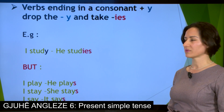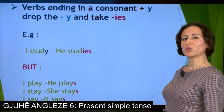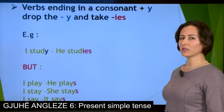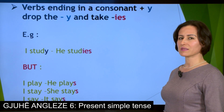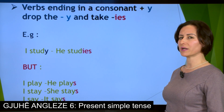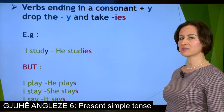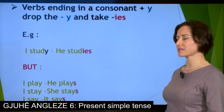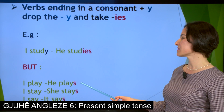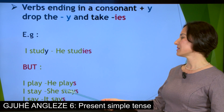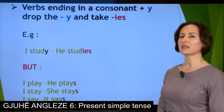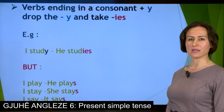But we mostly use only -S in the third person singular. As in the following examples: I play, he plays; I stay, she stays; I say, it says.